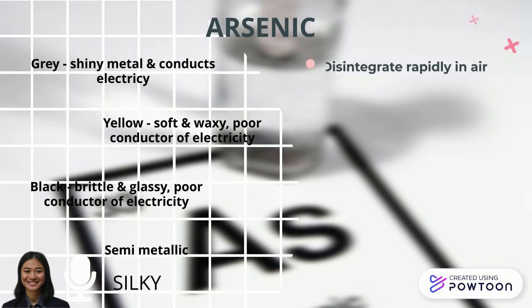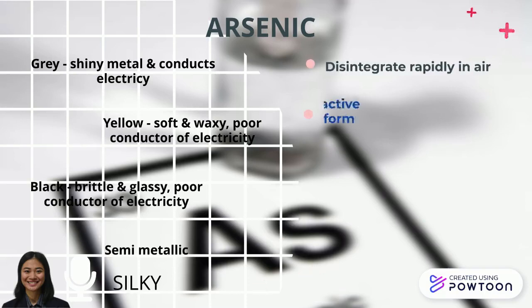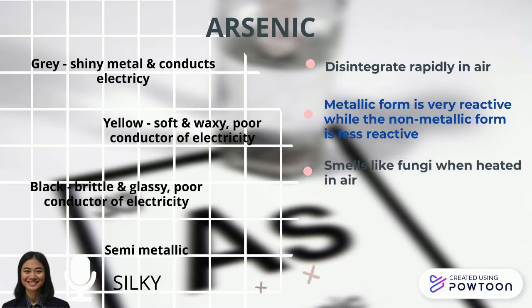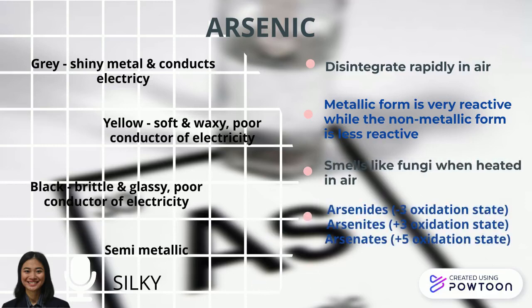For the chemical properties of arsenic, it disintegrates rapidly in air. Its metallic form is very reactive while the non-metallic form is less reactive. It smells like fungi when heated in air, and it also exists in three types of oxidation states, each with specific names.